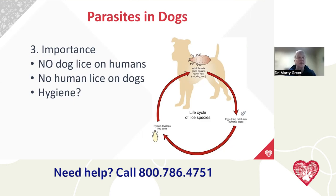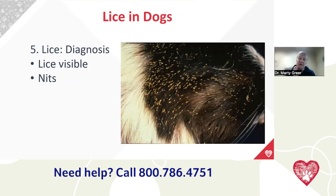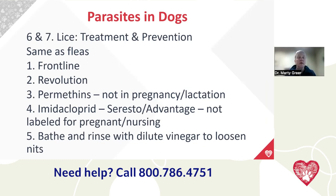Symptoms of lice include scratching, biting, licking, chewing on the neck, and visible hair loss. Lice are visible to the naked eye, though sometimes magnification is needed. Nits — louse eggs — glue to the hair of the pet, and are more visible on dark coats. Nit-picking refers to pulling these little nits off. Treatment is the same as for fleas: Frontline, Revolution. Permethrins are good but not during pregnancy and lactation. Seresto and Advantage products are not labeled for pregnancy and lactation. Rinsing after a bath with vinegar helps loosen nits.